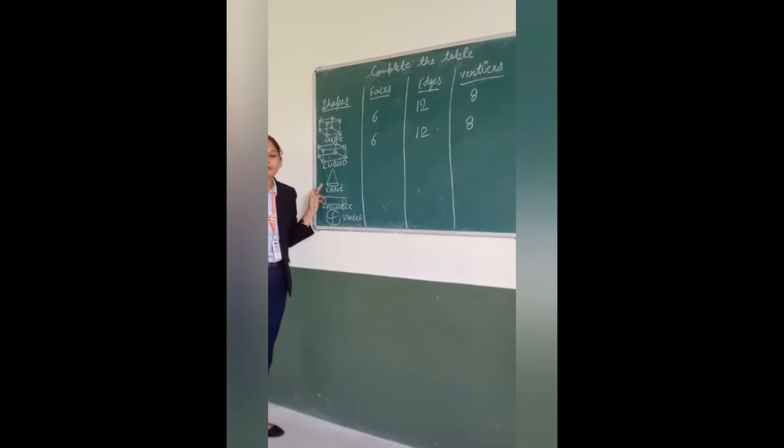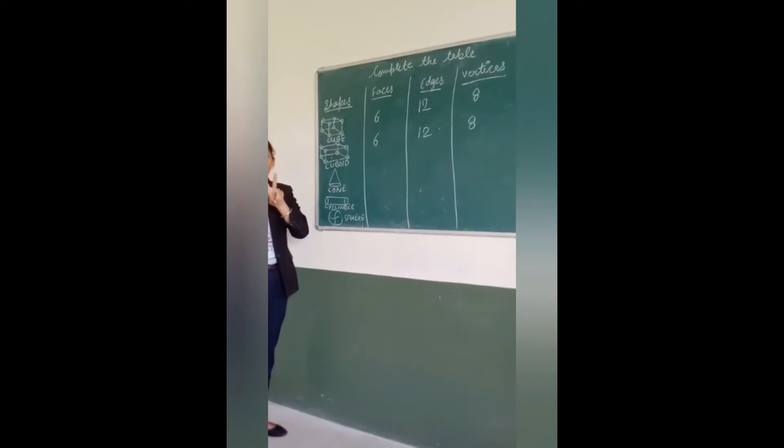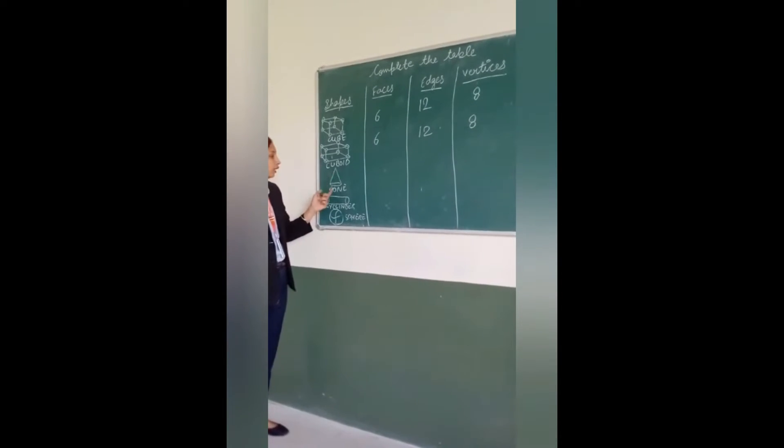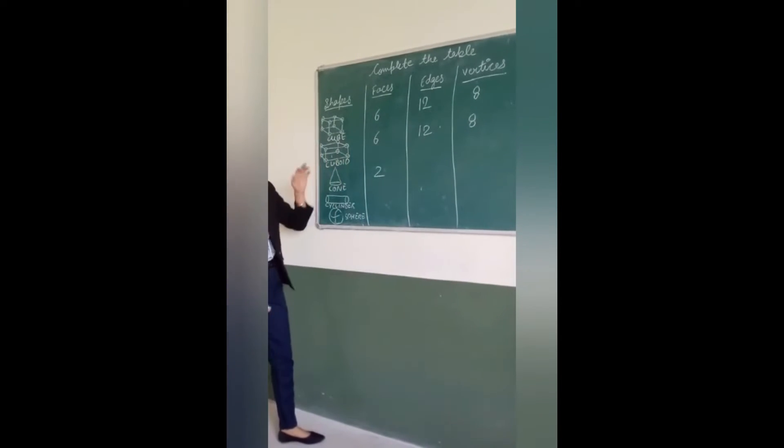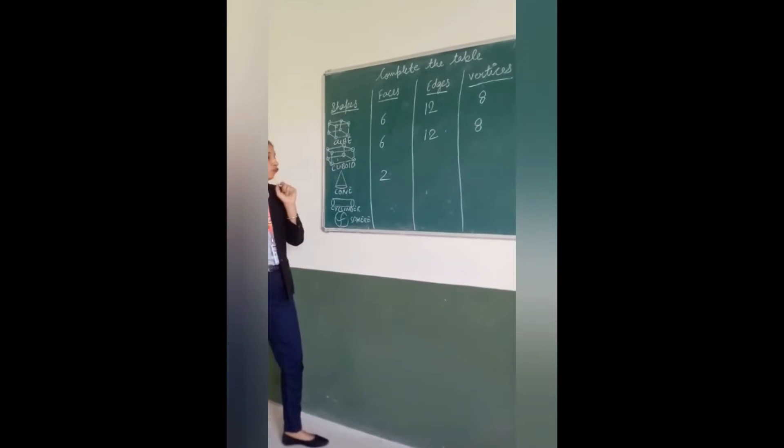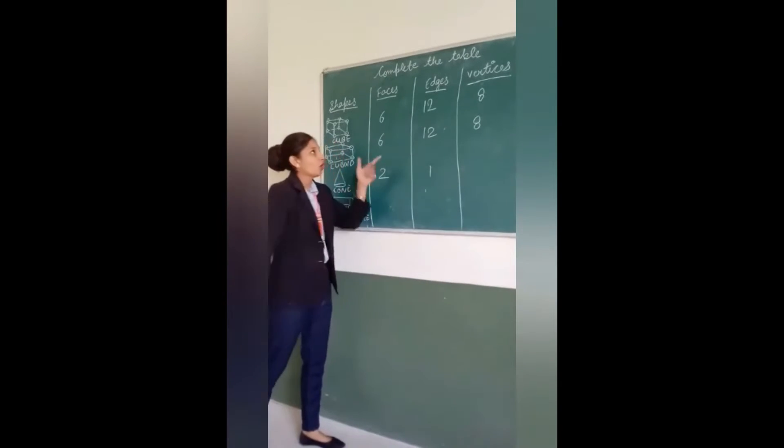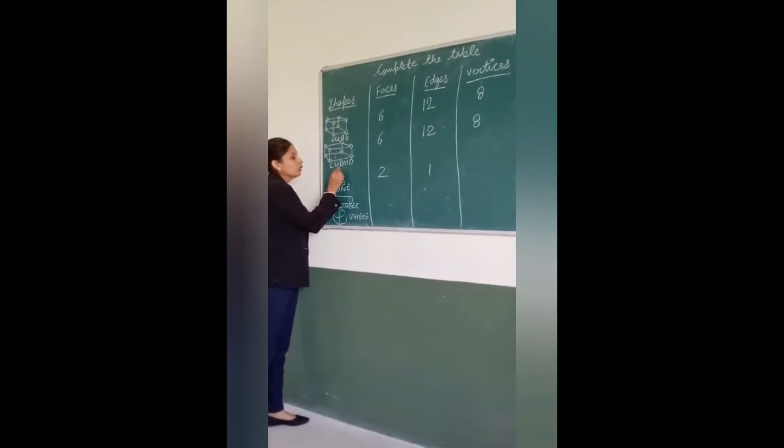And which is this shape? This is a cone. How many faces of cone? 2 faces. 1 and another? 2. How many edges? Edges only 1. And how many vertices? Vertex only 1.